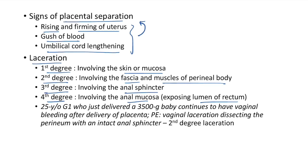Clinical case: 25-year-old primigravida delivered a 3.5 kg baby, continues to have vaginal bleeding after placenta delivery. Examination shows vaginal laceration dissecting the perineum with intact anal sphincter — this is a second-degree laceration (involves perineum but anal sphincter is intact).